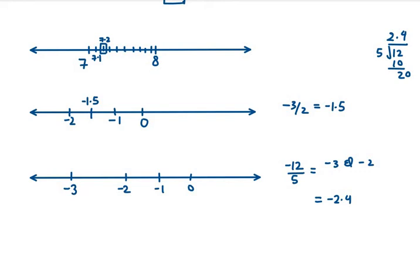It is at minus 2.4. So if you take 0.2 gap, there will be 4 pointers. So this is minus 2.2. Next will be minus 2.4. Next will be minus 2.6. So we have to mark 2.4. So you will mark this pointer.